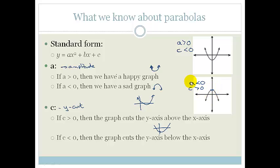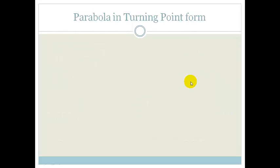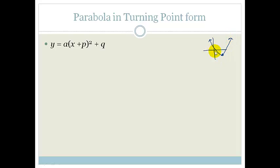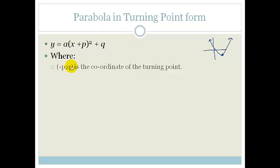That's what we've learned so far. Now we're going to teach you about a new form called the turning point form. In Grade 11 the turning point is the point where the graph turns — if a graph goes up and then comes back down, that lowest or highest point is the turning point. This equation rearranges things so that (−p, q) is the coordinate of the turning point.